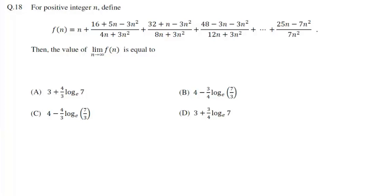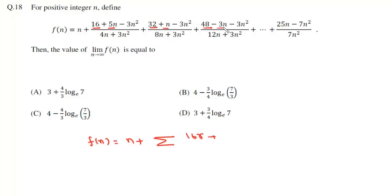In question number 18, we are given this function f(n) which we'll write in summation form. It will be 16, 32, and 48, so it will be 16r plus... now this is 5, 1, and minus 3, so the general term is a plus (r minus 1) into d, and the common difference is minus 4, so it will be 9 minus 4r.